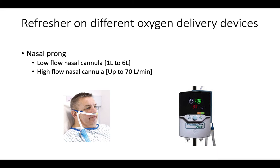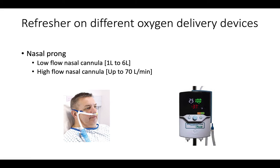Low-flow nasal cannula (nasal prongs) can deliver one to six liters of oxygen per minute. High-flow nasal cannula is a larger device allowing control of the temperature of delivered oxygen, liters per minute, and the fraction of inspired oxygen (FiO2). High-flow nasal cannula may also provide a small amount of PEEP. There are more parameters you can control with high-flow compared to standard nasal prongs.